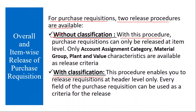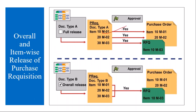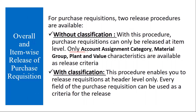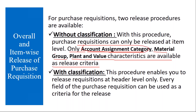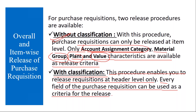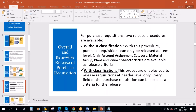For purchase requisitions, two release procedures are available: one is without classification, and another is with classification. Without classification, purchase requisitions can only be released at item level. The release criteria available are account assignment category, material group, plant, and value. This is without classification and it applies at item level. Whereas with classification, this procedure enables you to release requisitions at header level, and every field of the purchase requisition can be used as a criteria for the release.